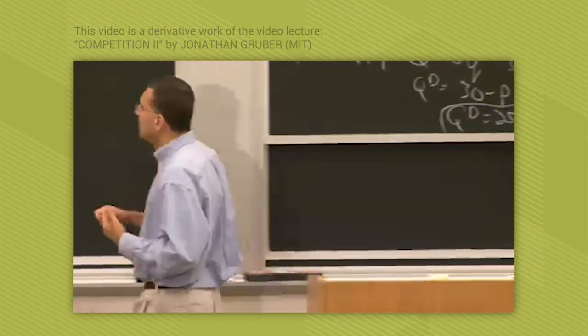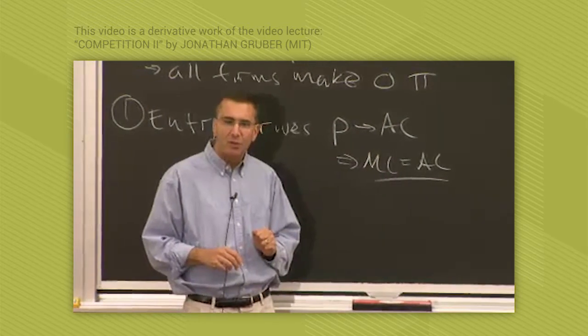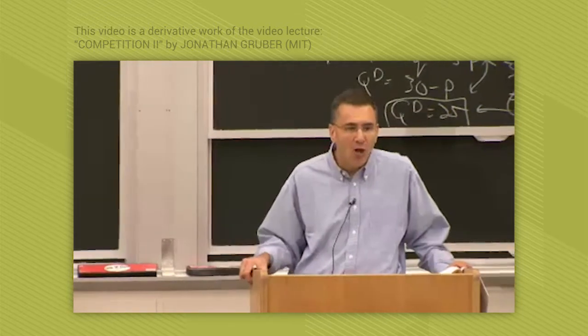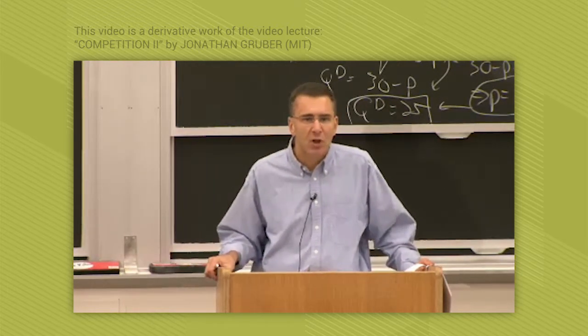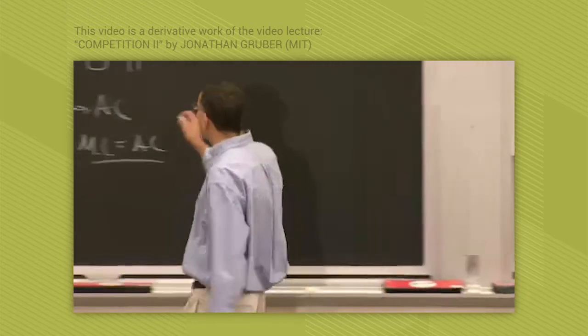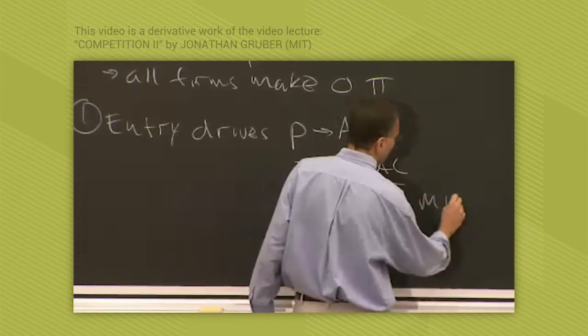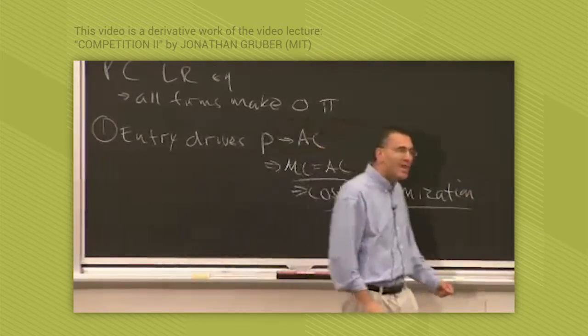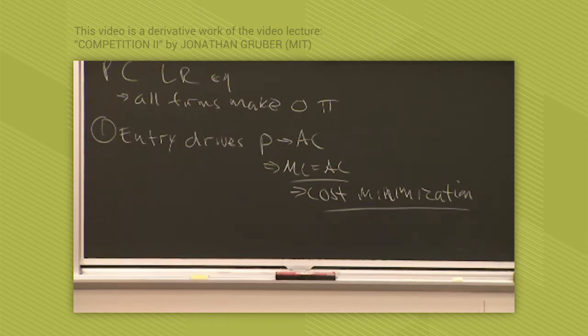And the key lesson is what is true at the point where marginal cost equals average cost? Well, look at our graph. That is the point of cost minimization. Note that that is the very minimum point of the long run average cost curve. So what we're saying is in the long run perfectly competitive equilibrium, firms will by definition minimize their costs. They'll produce as efficiently as possible.